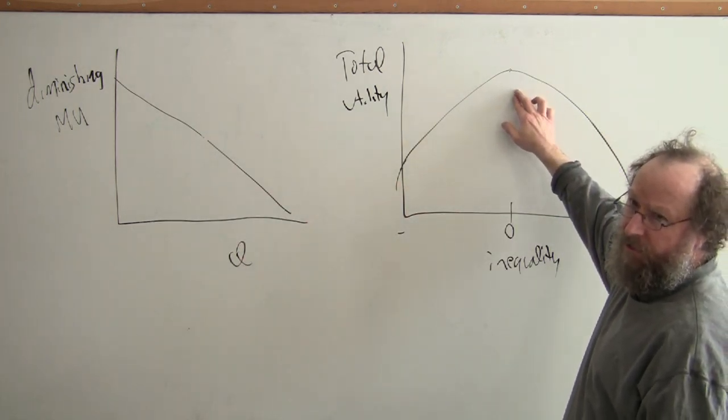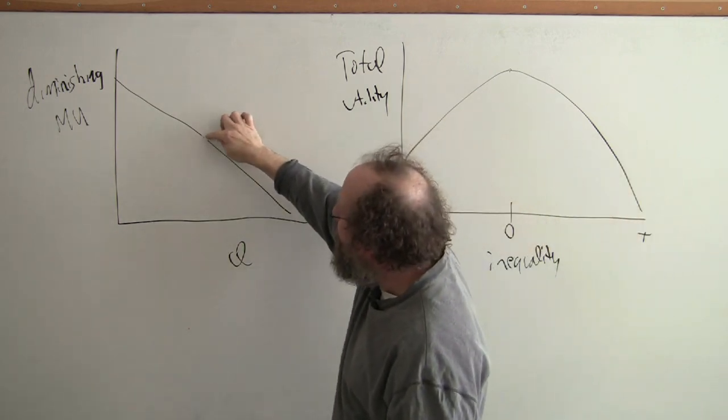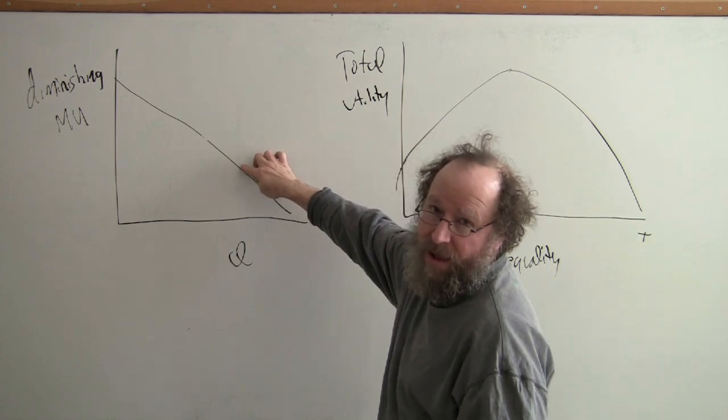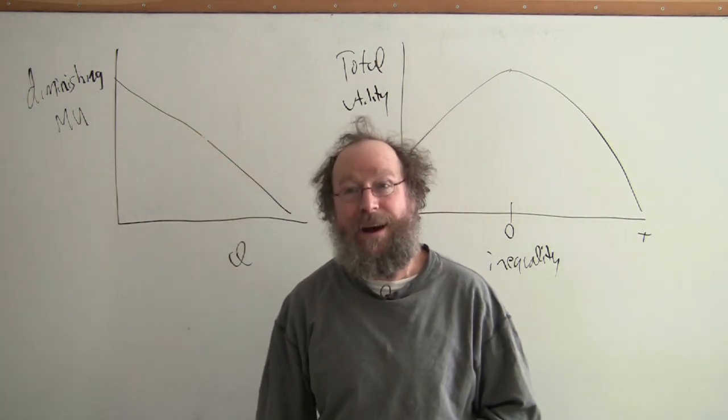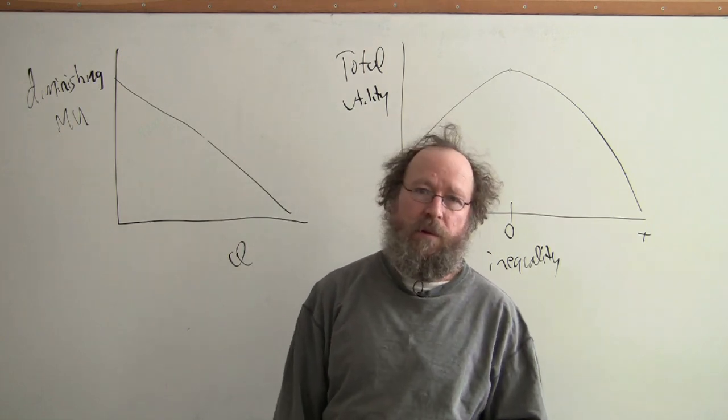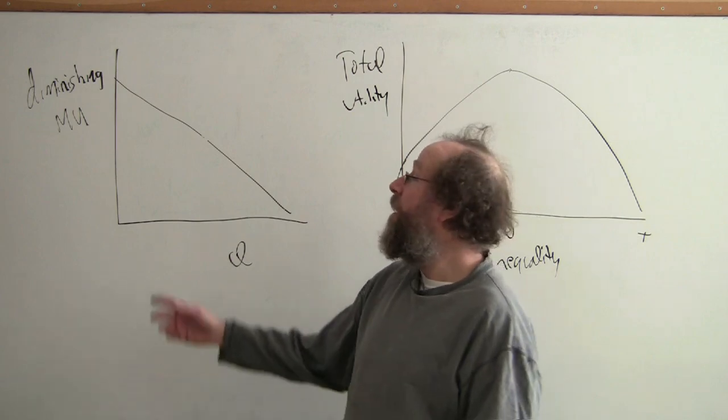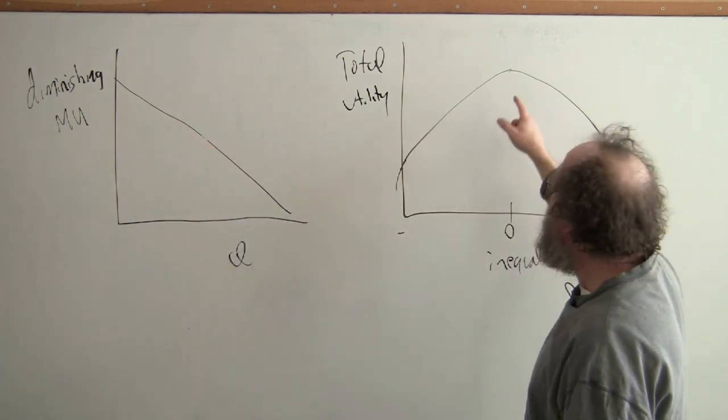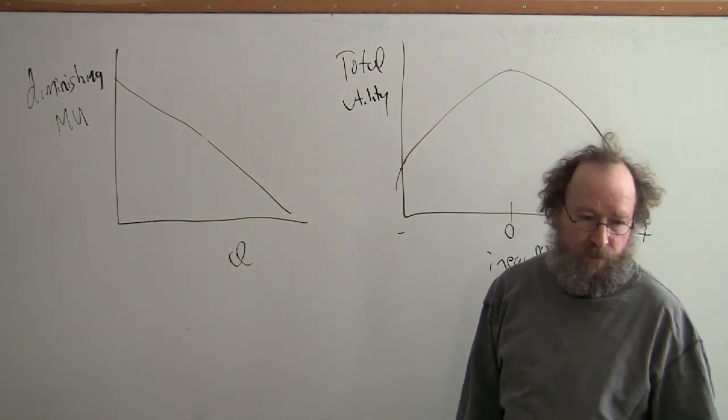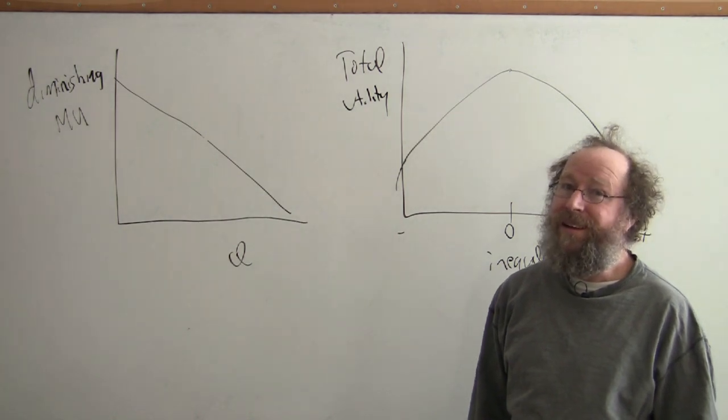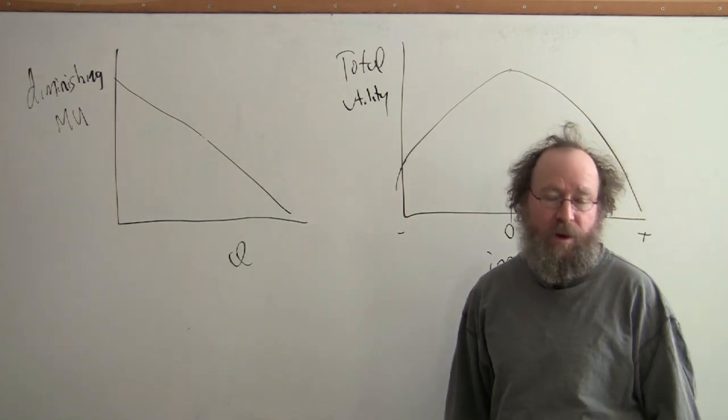Once you have an egalitarian income distribution, what happens if you keep taking from the people who used to be rich and giving to the people who used to be poor? Those who used to be rich start moving down this line further. The formerly poor benefit from more money, but not that much. And the formerly rich start to suffer. They're like, 'Can't go to the movies anymore... can't buy new clothes... can't afford to eat.' So diminishing marginal utility means that once you move away from equality in either direction, you're worse off. Taking from the rich to give to the poor raises total welfare. Taking from the poor to give to the rich lowers total welfare. Total welfare is maximized at an equal distribution.